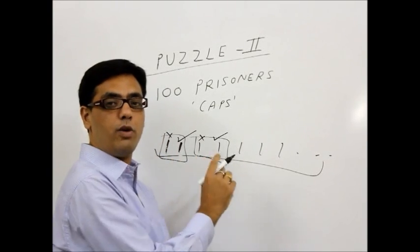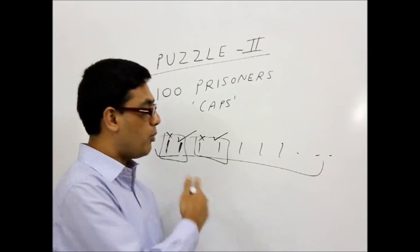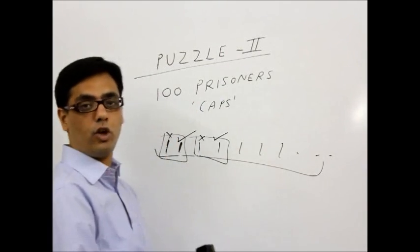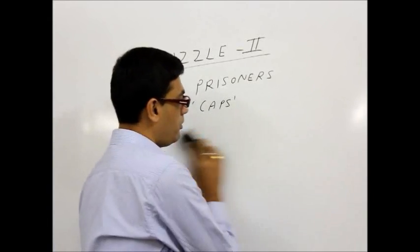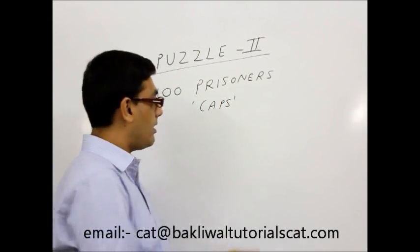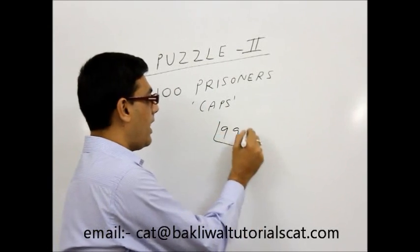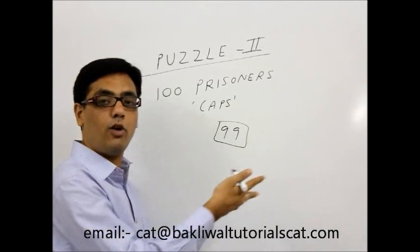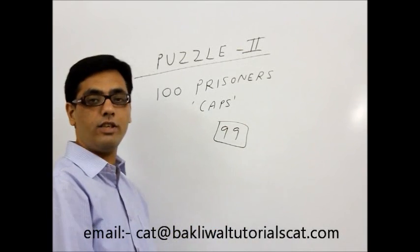And therefore, in every two, we are able to save exactly one. So by this strategy, we can save 50 people for sure. Okay, I'm sure you understood. But the beauty of the puzzle is, the answer is 99 people for sure can be saved. But obviously not by the logic we just discussed. So what is the logic of 99?